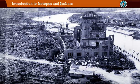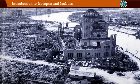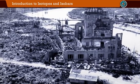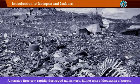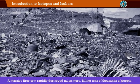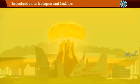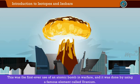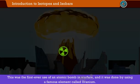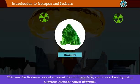Less than a minute later, everything within a mile of the bomb's detonation was obliterated. A massive firestorm rapidly destroyed miles more, killing tens of thousands of people. This was the first-ever use of an atomic bomb in warfare, and it was done by using a famous element called uranium.